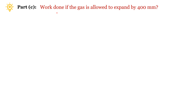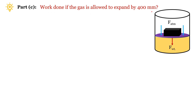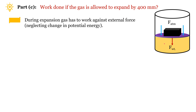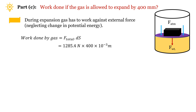In part C, the gas is allowed to expand by 400 mm. When the gas expands it works against the external force to move upward, and we neglect the change in potential energy of the gas itself. Work done by the gas equals force × displacement: the total force calculated in part A multiplied by 400 mm converted to meters gives us the work done by the gas.